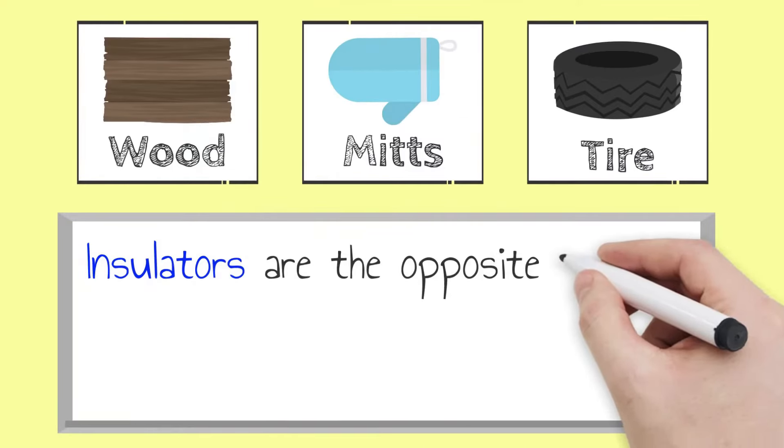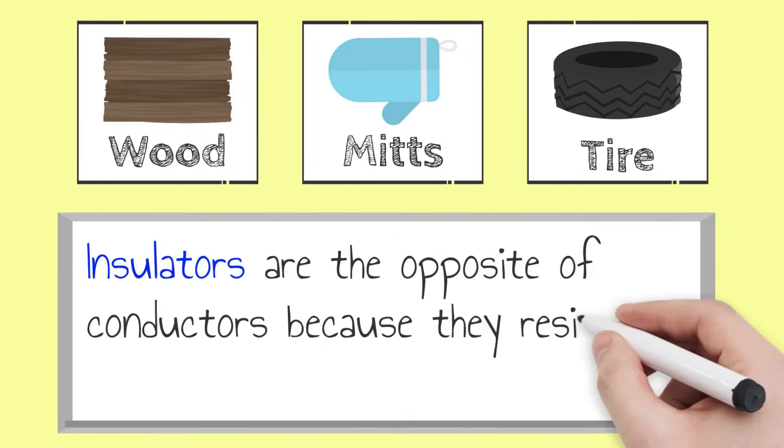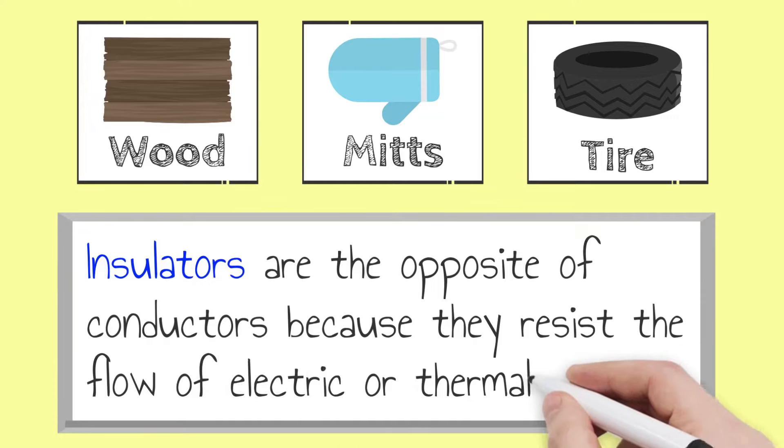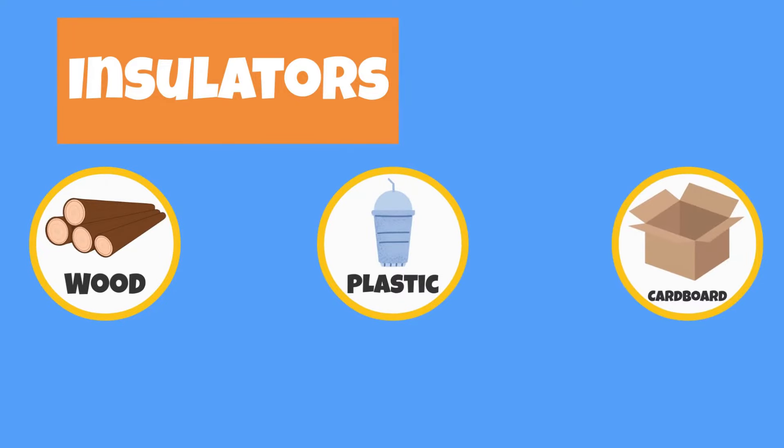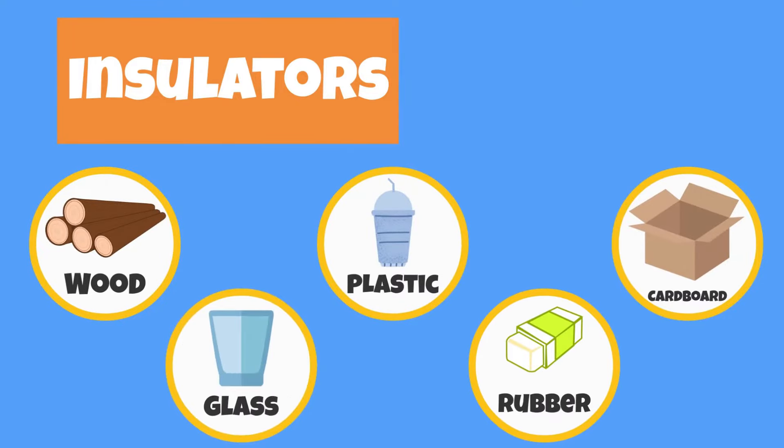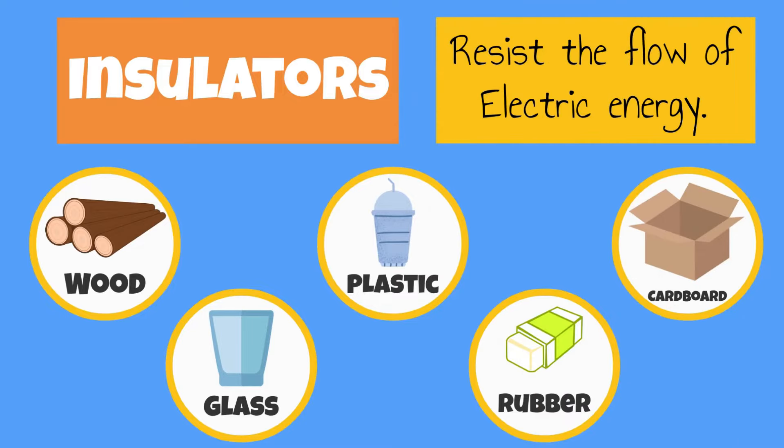Insulators are the opposite of conductors because they resist the flow of electric or thermal energy. Some electrical insulators include wood, plastic, cardboard, rubber, and glass. They all resist the flow of electric energy.